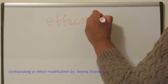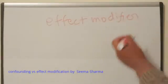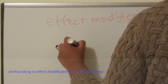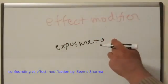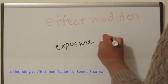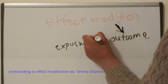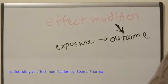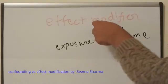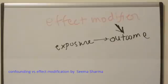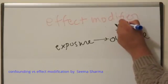Now, what is an effect modifier? It is something that has a relationship only with the outcome. It's always going to be something present in the cells, tissues, or organs. A good example is the DNA structure of someone.